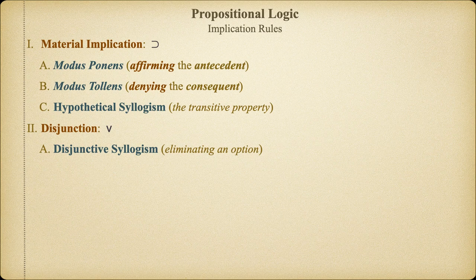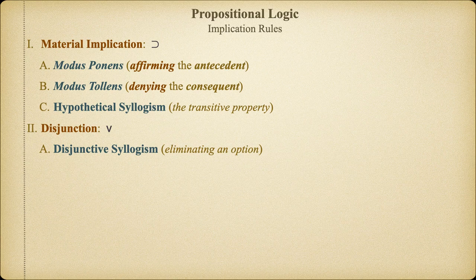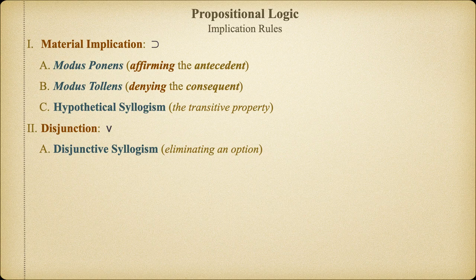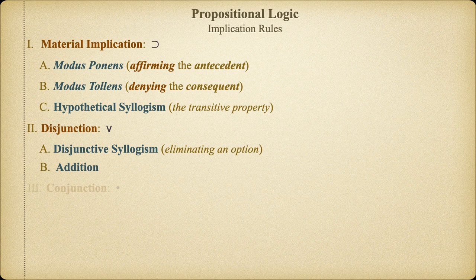In Part 1 of this unit, we learned four simple, valid argument forms using material implication and disjunction. Those were modus ponens, modus tollens, hypothetical syllogism, and disjunctive syllogism. In this lecture, we're going to add another valid argument form using disjunction. We'll call it addition.